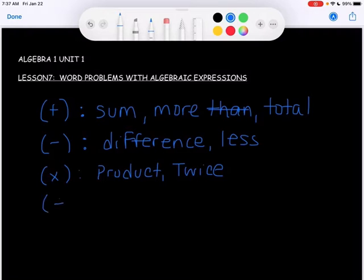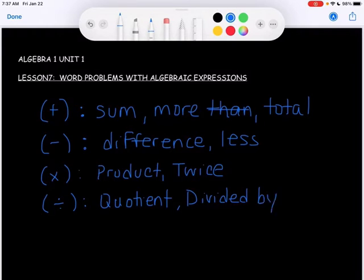Division - obviously divide, but quotient is a big one you'll see. Divided by, and again there's many more, but these are some of the main ones.